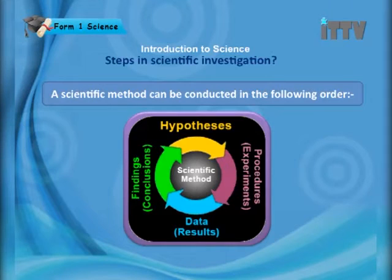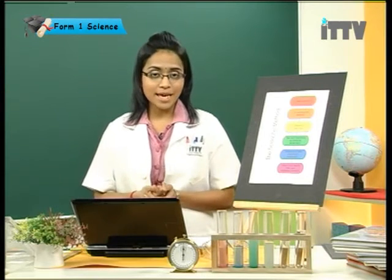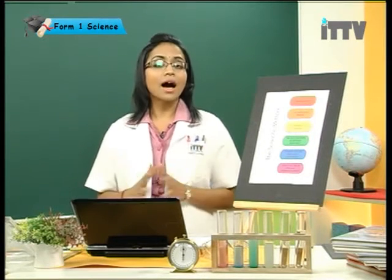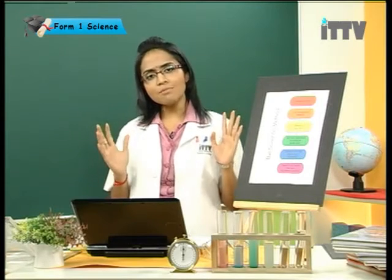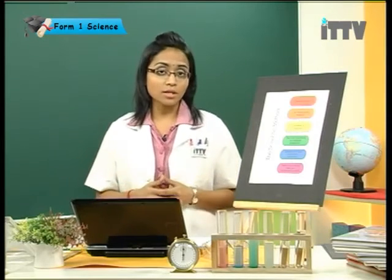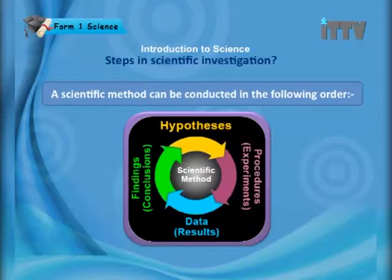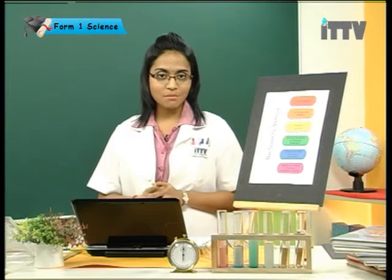A scientific method can be conducted in the following order. Firstly, you have got a hypothesis. What's a hypothesis? Hypothesis is something that can be investigated or tested. The main aim of an experiment is to prove whether the hypothesis is correct or not valid. First we have hypothesis, then we carry out the experiment. After the experiment, we get data or results. Then you compile all your findings into a conclusion. This is a scientific method.